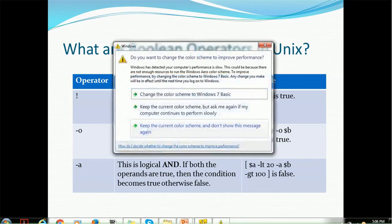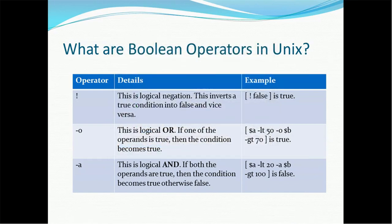Hyphen-o is a logical OR — if one of the operands is true then the condition becomes true. For example, if variable a is less than 50 or variable b is greater than 70, then this condition will become true. Hyphen-a is a logical AND — if both operands are true then the condition will be satisfied as true, otherwise it will be false.